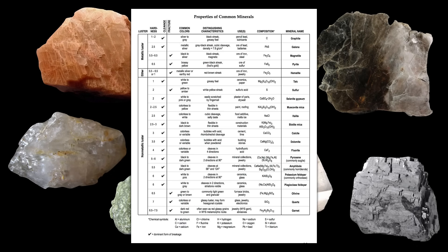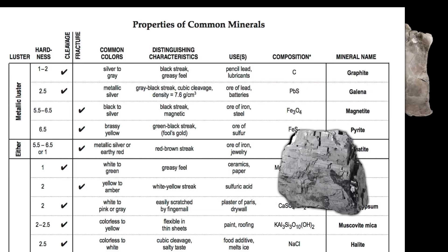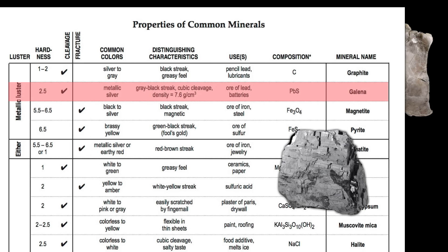Let's take a look at the New York State Earth Science Reference Tables. This is the Properties of Common Minerals chart. Here's the column for Galena. From left to right, it tells us it has a metallic luster, is very soft with a hardness of only 2.5, displays cleavage, has a metallic silver color, a gray-black streak, and is very dense. It is used as an ore of lead and in batteries, and is composed of lead and sulfur.